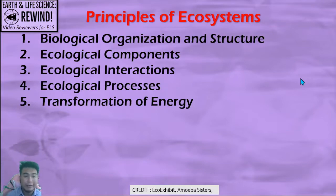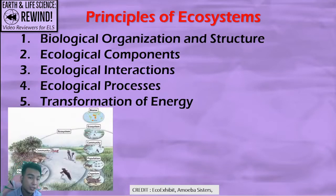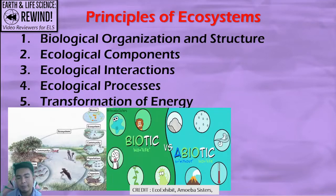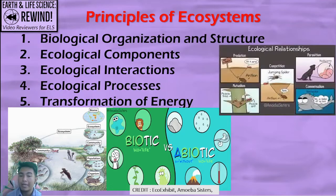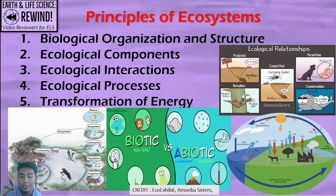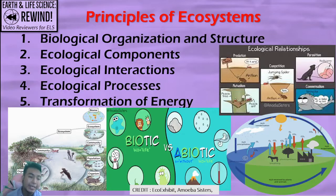To wrap up our video reviewer, here again are the principles of ecosystems: biological organizations and structure; ecological components like biotic and abiotic factors; ecological interactions including predation, competition, parasitism, commensalism, and mutualism; and ecological processes like the biogeochemical cycles and the transformation of energy.